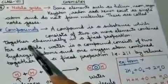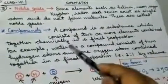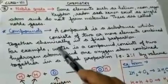Next is compound. A compound is a substance which consists of two or more elements combined together chemically in a fixed proportion. When two or more elements combine in a fixed ratio, they form a compound. For example, water is a compound — it consists of two hydrogen atoms and one oxygen atom combined in a fixed proportion of 2:1 by volume.